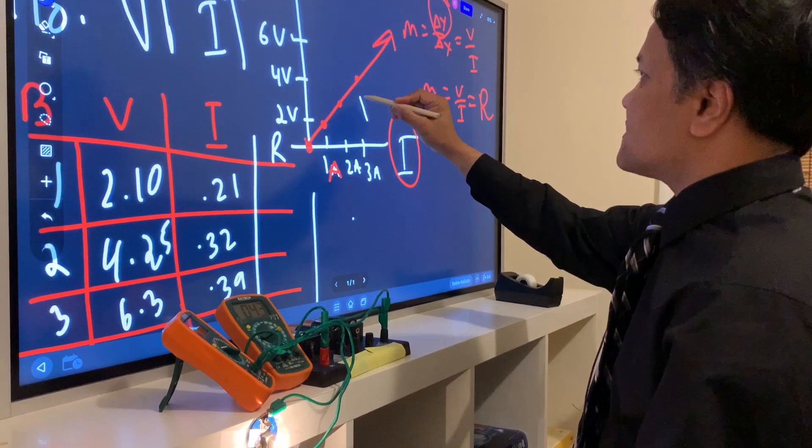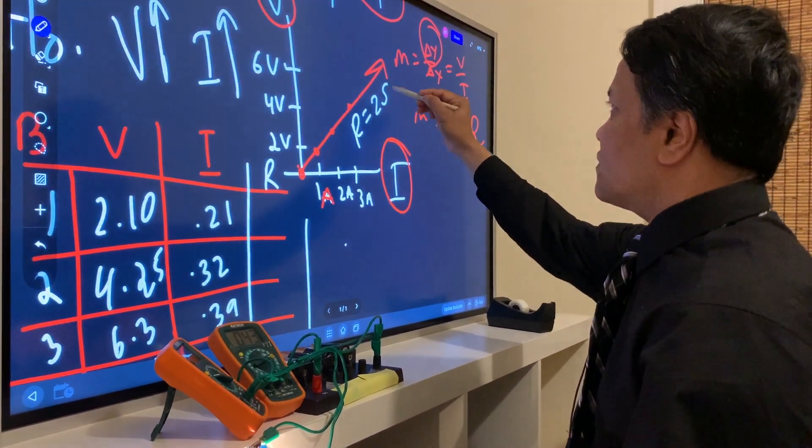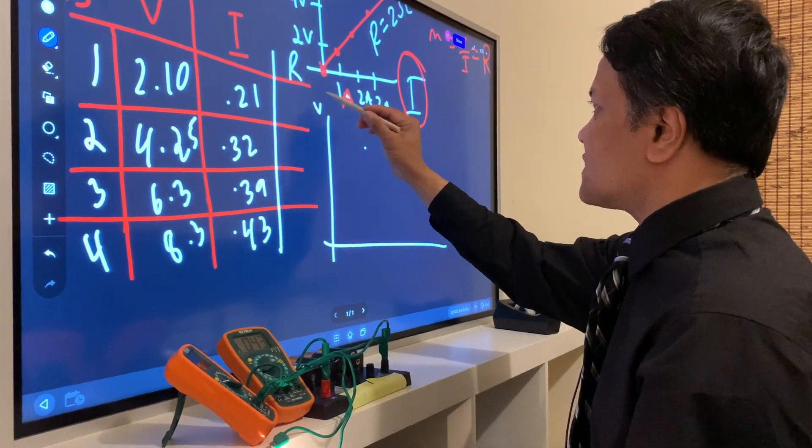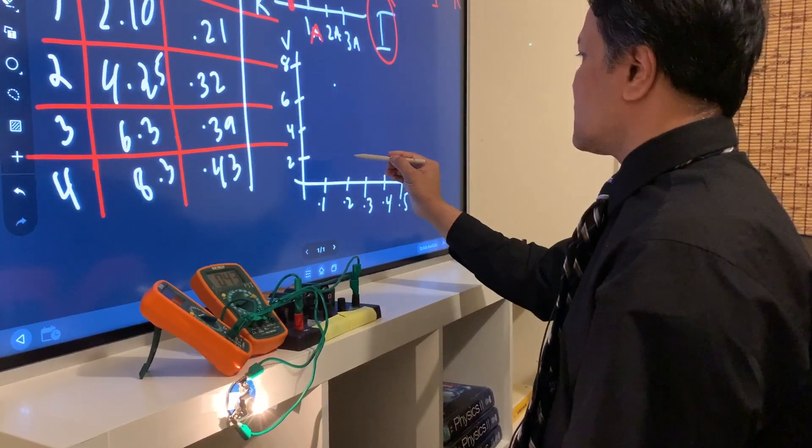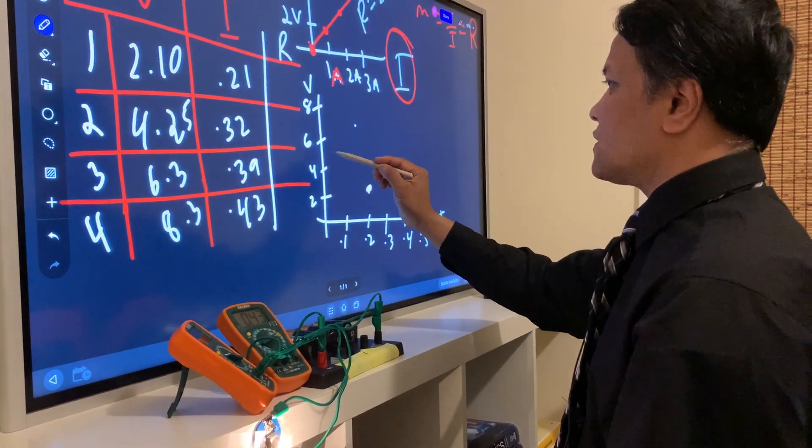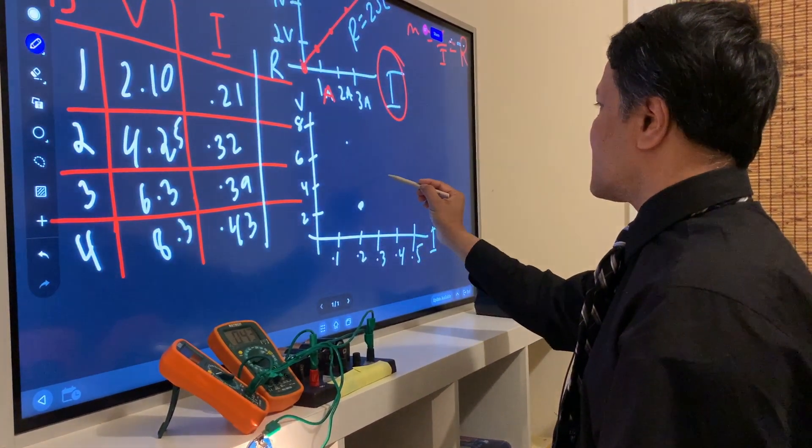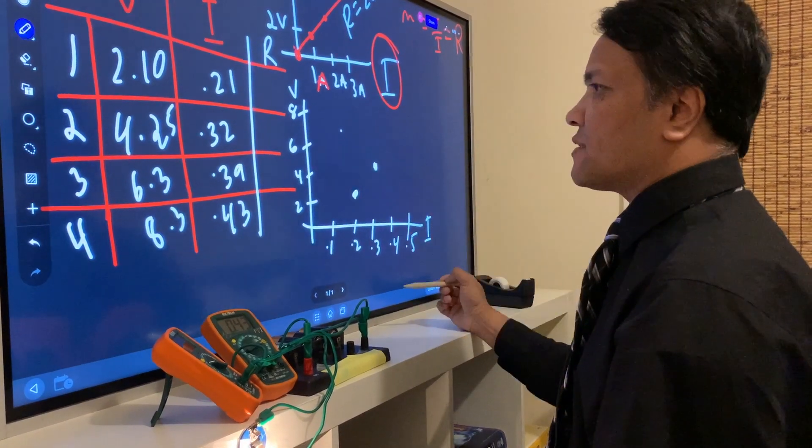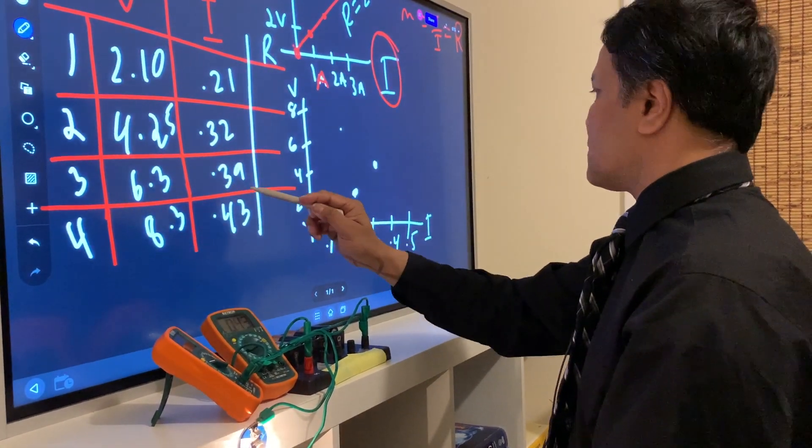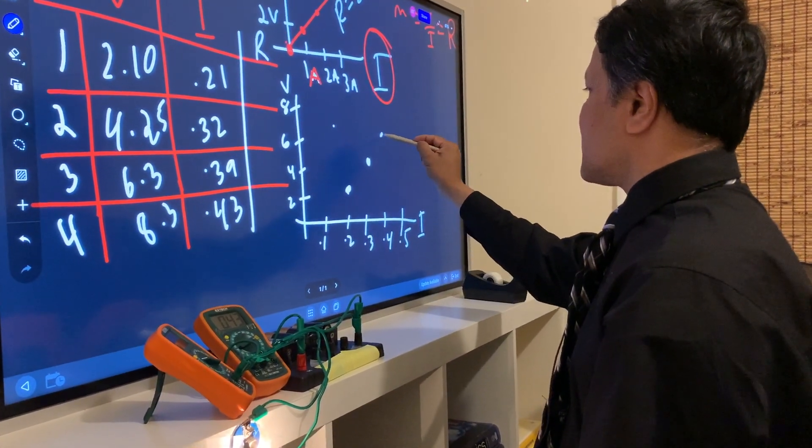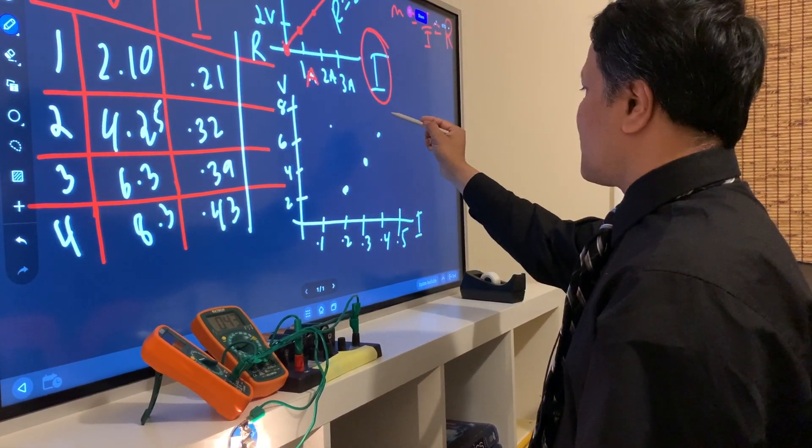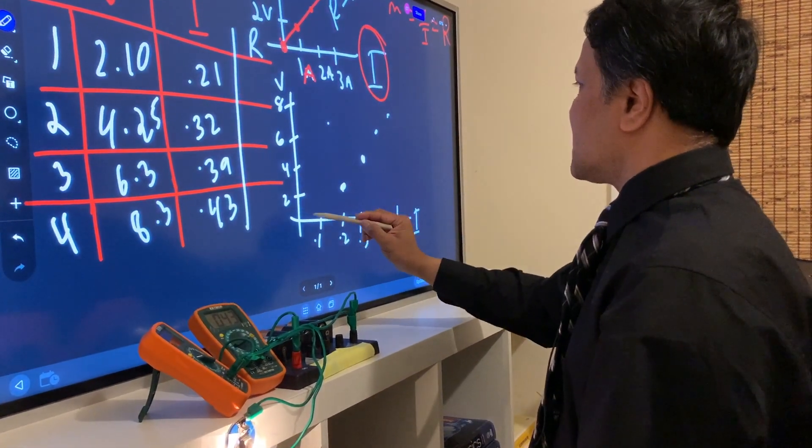So in this case, you have a constant resistance, and resistance is 2 ohms. However, if you plot it, this is the voltage and this is the current. First data is right here. And the second data is 4.25 and 0.32. The data is right here. And the third point is 6.3, 0.39. Right here. And then 8.3, 0.43, right here.